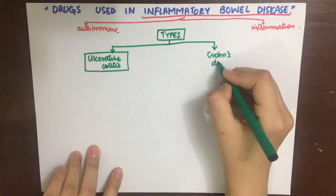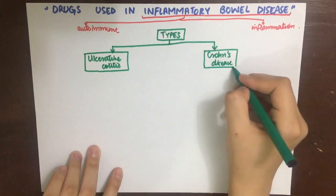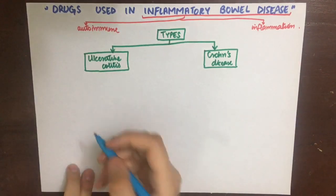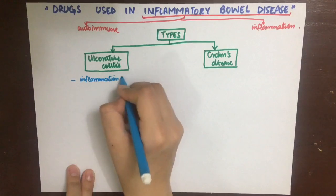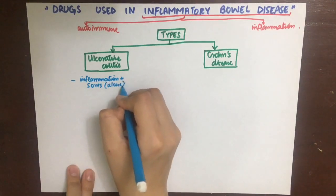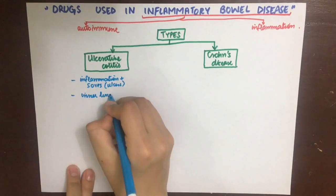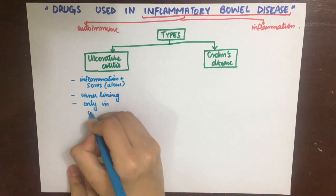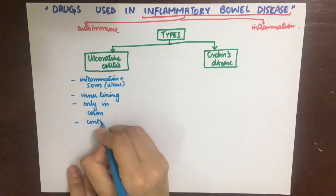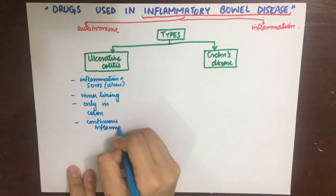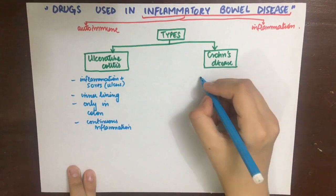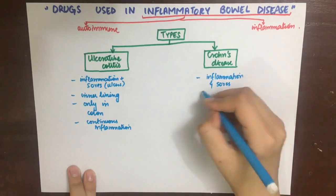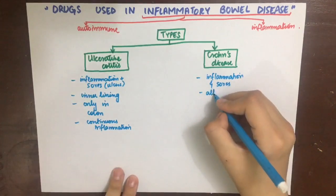The symptoms of both are basically the same, and it is very difficult to differentiate between them unless a colonoscopy is done. Ulcerative colitis is a long-lasting inflammation with sores or ulcers in the inner lining of the colon, while Crohn's disease occurs in all the layers of the bowel walls. Ulcerative colitis is limited to the colon, while Crohn's disease can occur anywhere from the mouth to the anus.